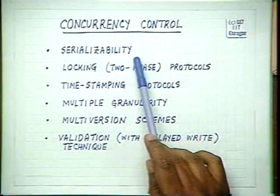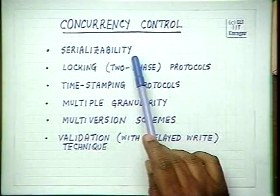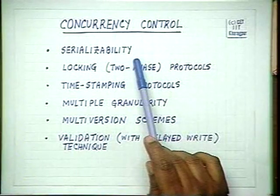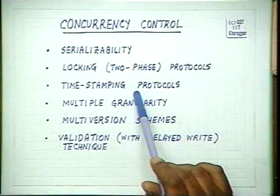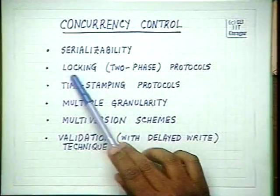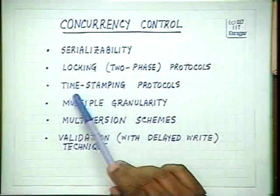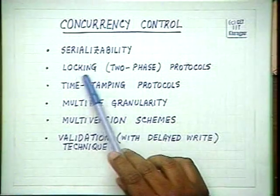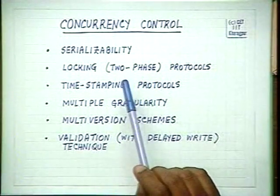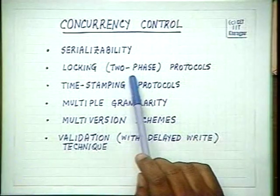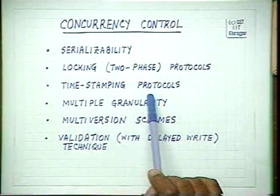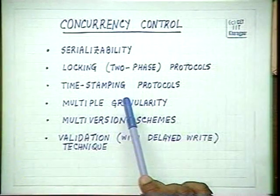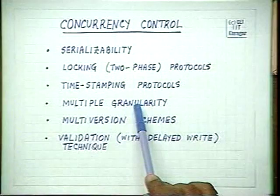Serializability is not serial execution, but it is determining that a concurrent schedule is equivalent to some serial schedule. Detection of serializability and maintaining serializable schedules is what we try to achieve in concurrency control. Two major techniques followed are the locking protocols and the timestamping protocols. We have seen the two-phase locking protocol and that if we maintain data dependency properly, we can have a two-phase protocol which is conflict serializable and deadlock free. Similarly, in timestamping protocols, we found rules for conflict serializability and deadlock-free schedules.